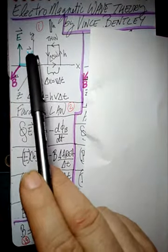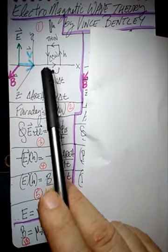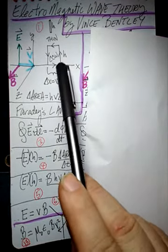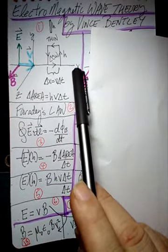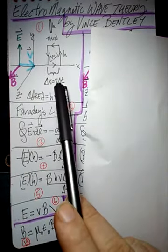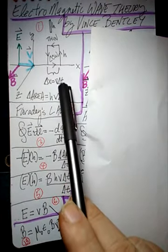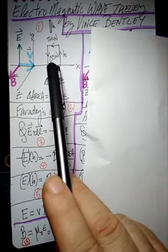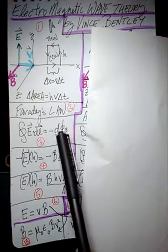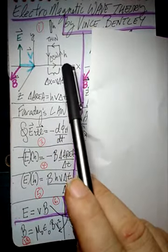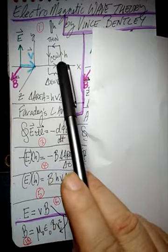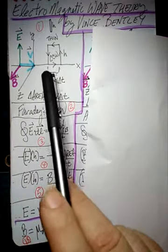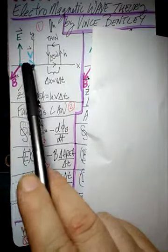Let's assume the wave is traveling at velocity v. The thin width of the loop is delta x, and delta x equals the velocity of the wave times the differential time delta t. The height of the loop I'll call h. So the area of the loop is the width times the height, which is v·delta t times h. We have the area of the loop and an electromagnetic wave traveling through it.